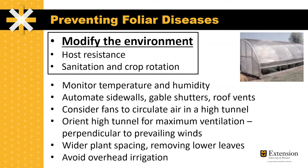You can consider things like automating sidewalls, gable shutters, roof vents, and using fans to circulate air, as well as orienting high tunnels perpendicular to prevailing winds for maximum passive ventilation. Wider plant spacing and removing lower leaves can improve airflow in the canopy and reduce the chance of fungal infection. You also want to avoid overhead irrigation, as it will increase the duration of leaf wetness and increase the likelihood of a fungal pathogen infection.